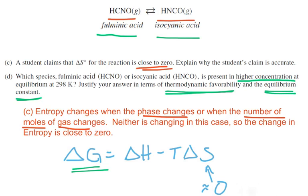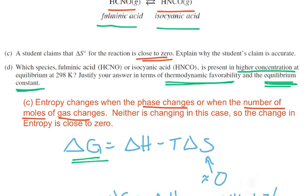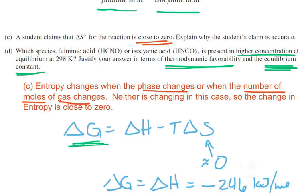So again, notice here it says two different things, and across the nation, students forgot to talk about both things. So we have delta G equals delta H minus T delta S. And in this case here, delta H, we just figured that out. That's the negative 246. And delta S, we just said that's pretty much zero. So T times delta S is going to be zero.